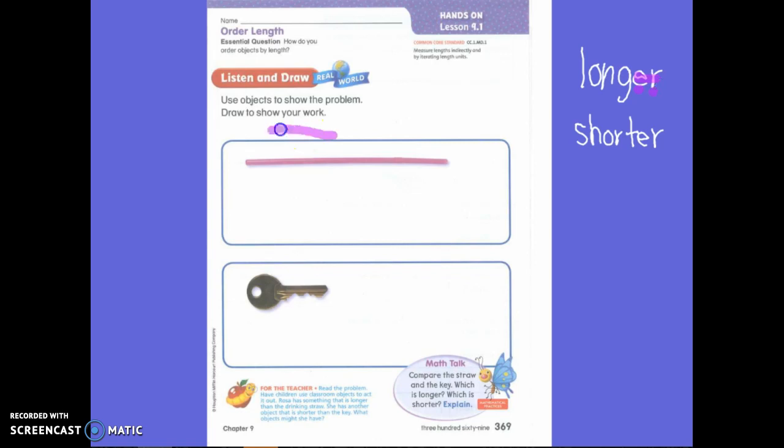So first let's take a look at this straw. We know what a straw looks like, we know about how long the straw is. It's about the size of our pencil, right? I want to know something that Rosa could have that is longer than the drinking straw. So we are comparing the straw with something else, but it has to be longer. Does anyone have any ideas on an object that could be longer than the drinking straw?